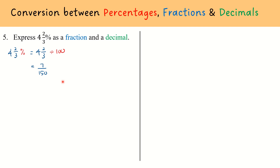I hope you're familiar with that button in your calculator. So we have arrived at the fractional value 7 over 150, which equals 4 and 2 over 3 percent. Then for 7 over 150 using the calculator function, I can convert it into a decimal — and it happens to be a recurring decimal. Hence, my answer will be 0.046 with a dot on top.